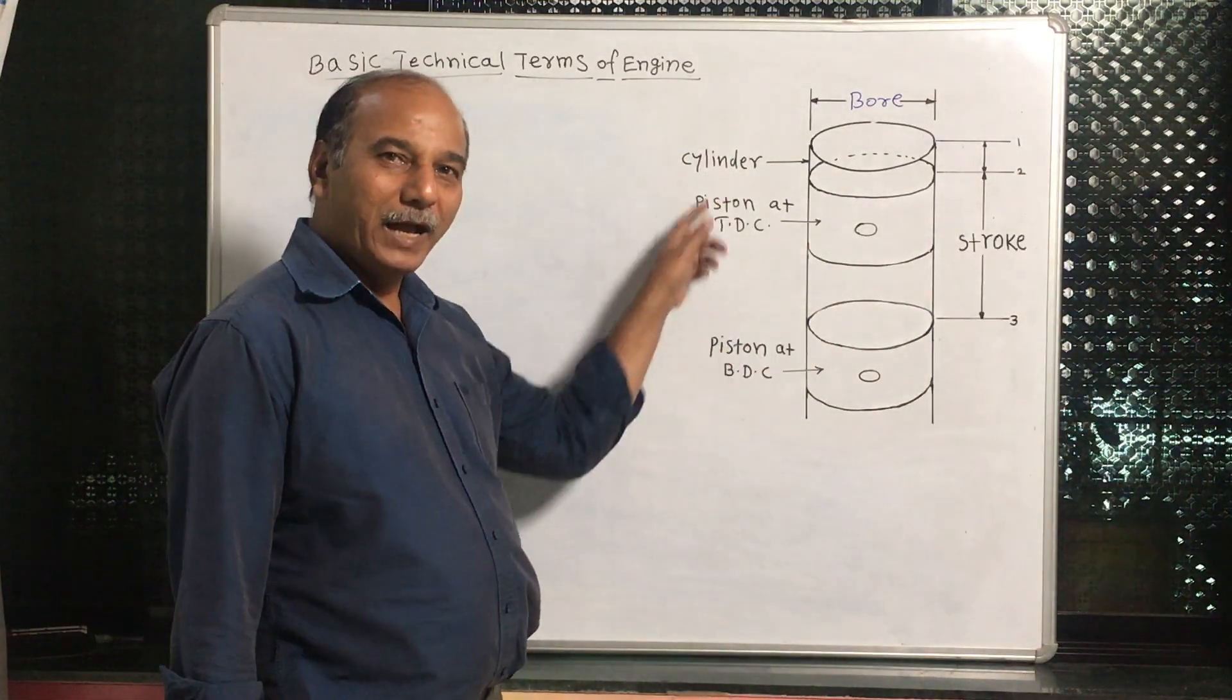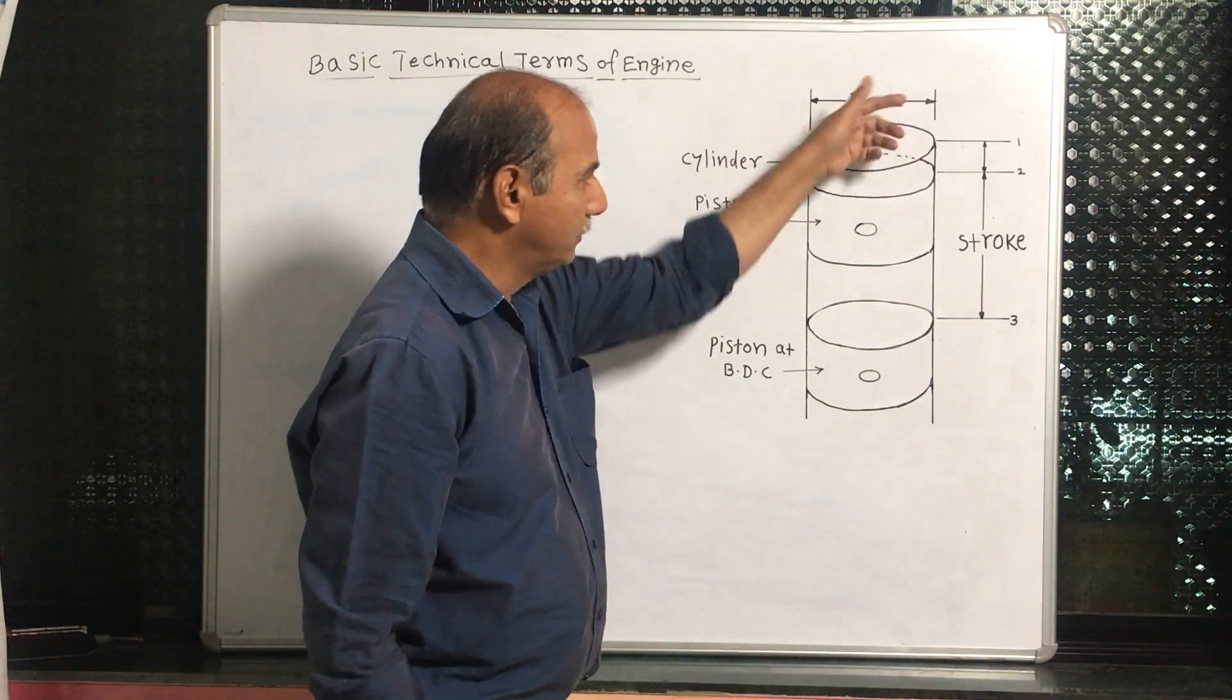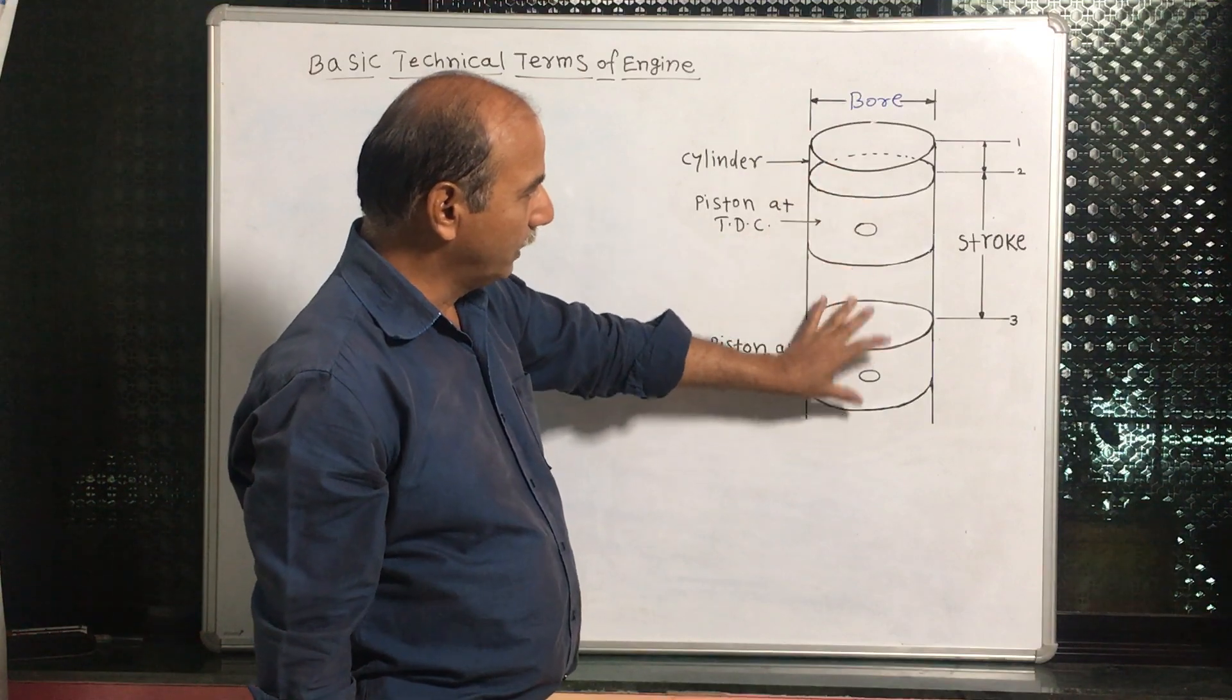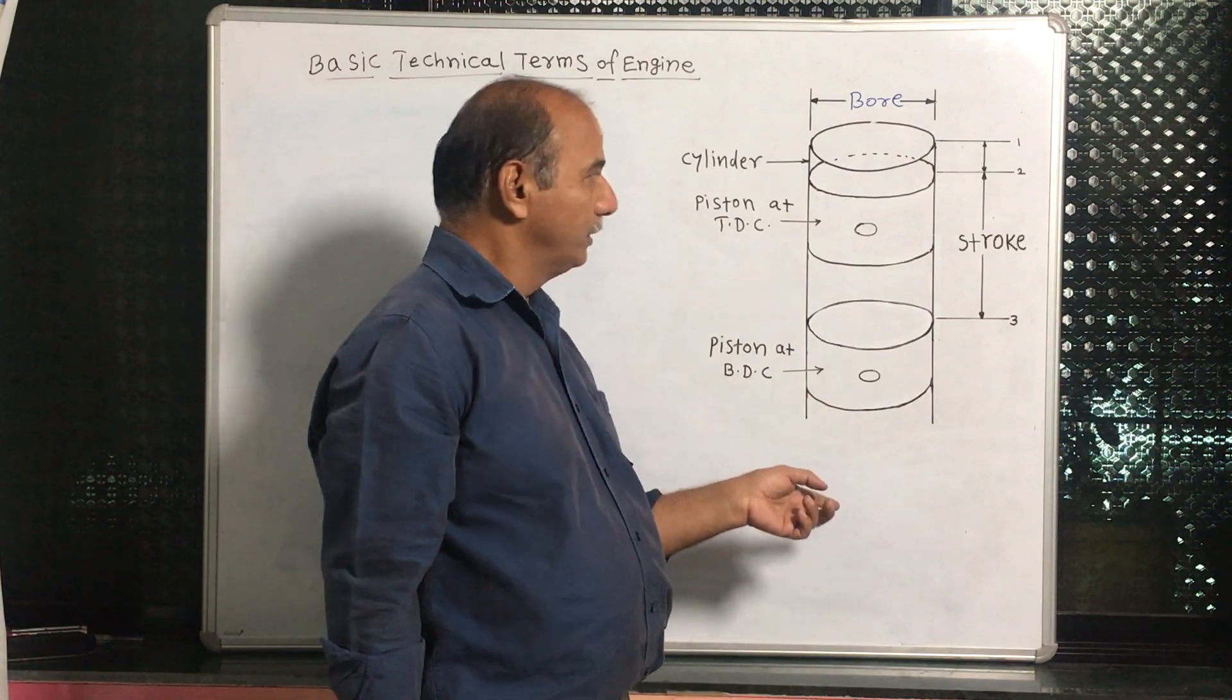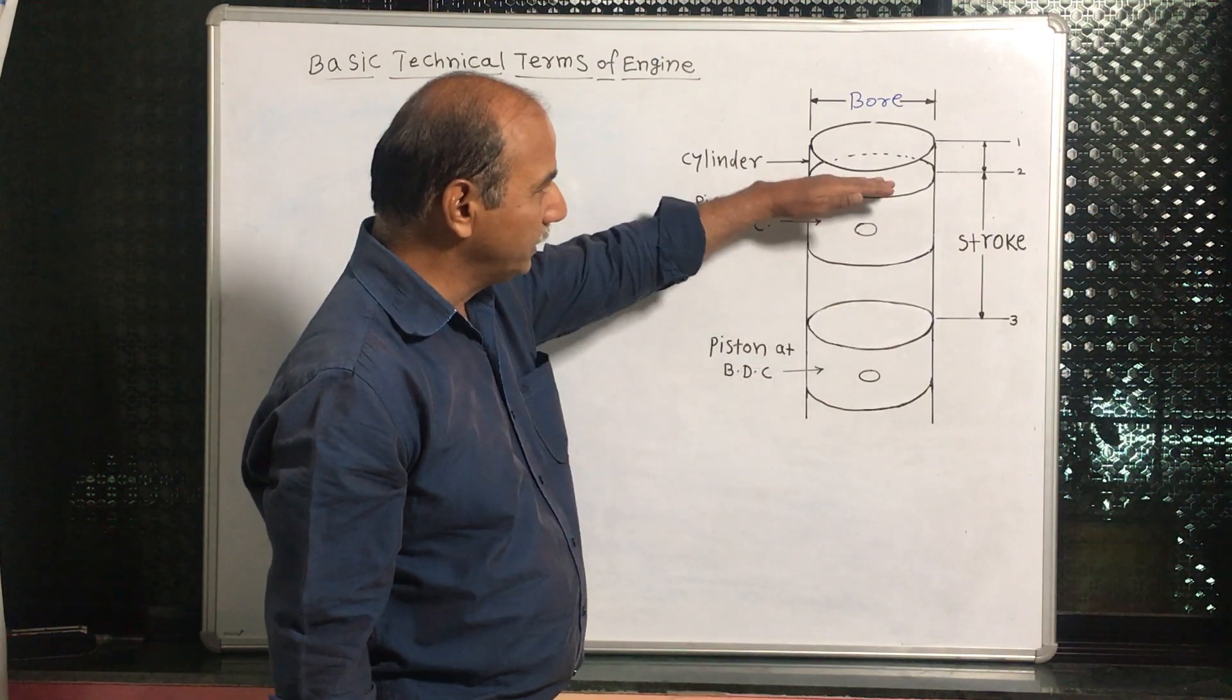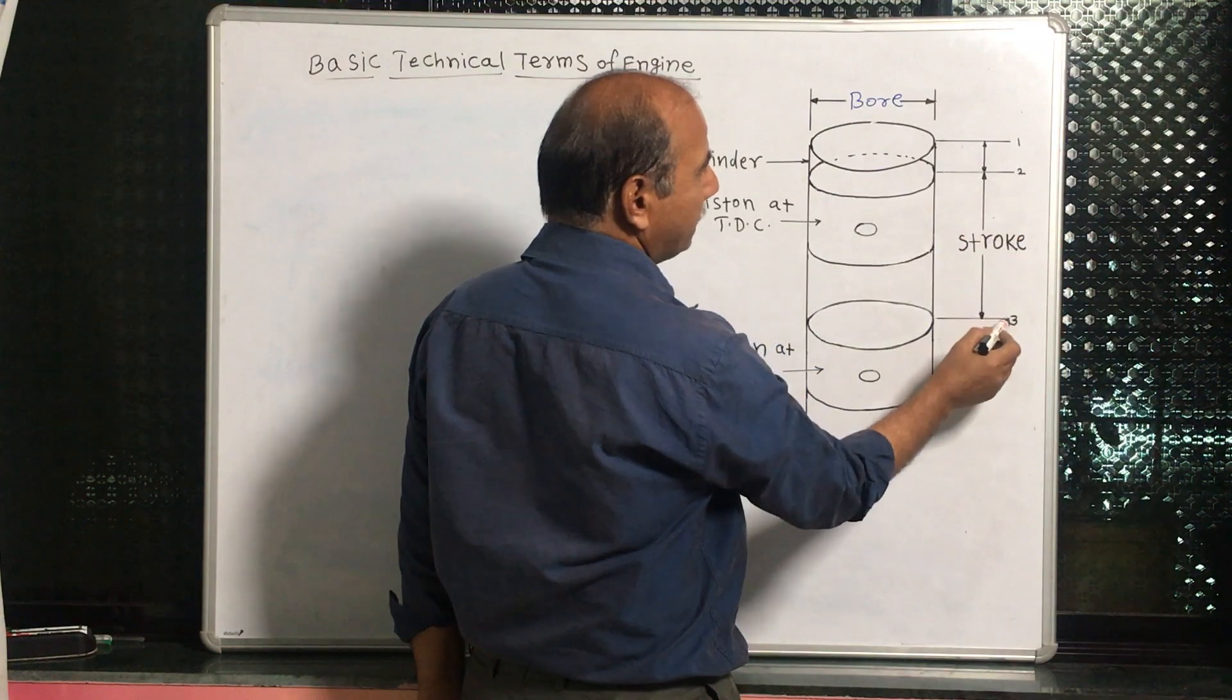I have drawn the diagram here. Just you see, this is the cylinder. Totally this is the cylinder. In this cylinder, two pistons are shown here, one and two. Piston is the same, but position is different. This piston moves from BDC to TDC and TDC to BDC. I have put the numbers here: one number, two number, and three numbers. Some reason should be there.